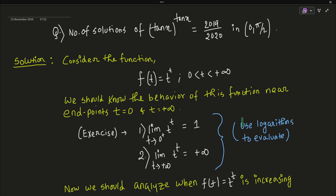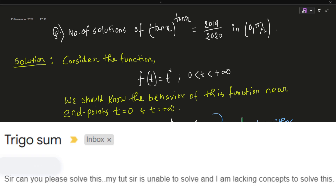Hello everyone, welcome to this video. We are going to talk about a very special problem of the exponential type and look at its solution in great detail. Someone sent me a mail regarding this problem asking for help, where tan(x) to the power tan(x) was equal to 2019/2020, over a given interval, and they said their teacher could not solve it.